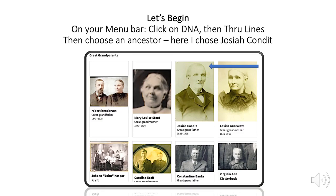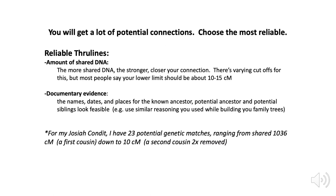Let's start with my ancestor Josiah Condit. Go to the menu bar, click on DNA, then ThruLines, and choose an ancestor from the various pictures. It'll give you a lot of connections — start with something that's the most reliable. You can tell what's most reliable because you share a significant amount of DNA. Generally, people recommend 10 to 15 centimorgans, but you also need to pay attention to documentation. Documentary evidence should include reliable evidence of names, dates, and places and records that substantiate them. For my Josiah Condit, I got 23 potential genetic matches ranging from 1,036 centimorgans down to 10 centimorgans.